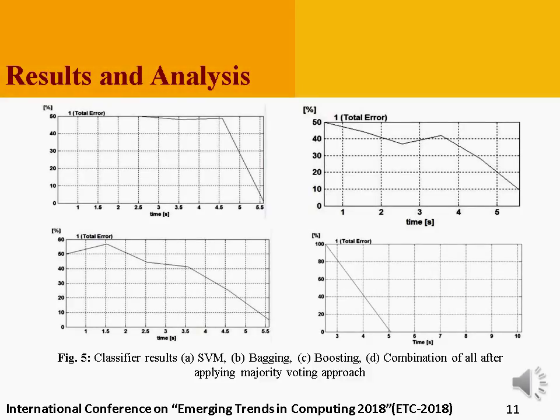From the figure, we can observe that all three classifiers show minimum classification error after around 5.5 seconds. Accordingly, majority voting also shows zero error after 5.5 seconds, since it takes the majority of all three classifier results. The proposed system builds different classifier models at different time points with different classifier parameter values. If we pick classifier models built at around 5.5 seconds, where the error is minimum for all three classifiers, the majority voting technique will show 100% accuracy at every time point.